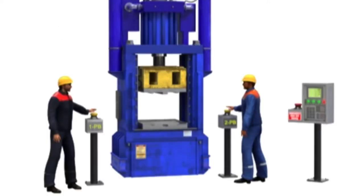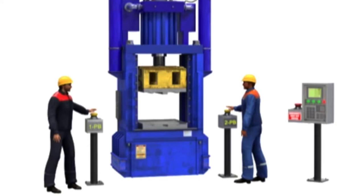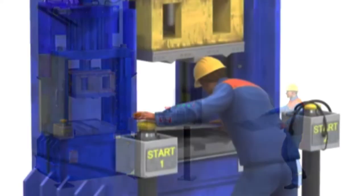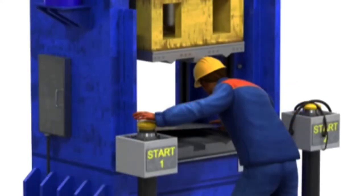While two-hand controls wired in series is ideal for machines with two operators, it becomes unsafe when only one operator is present. Although two buttons are still required, it becomes much easier for a single operator to tie or weigh down one button, allowing unsafe operation. To prevent this unsafe condition but still permit a single operator, anti-tie-down circuits are employed.